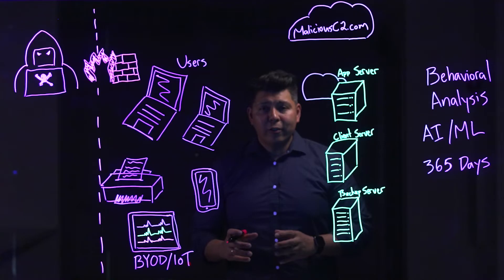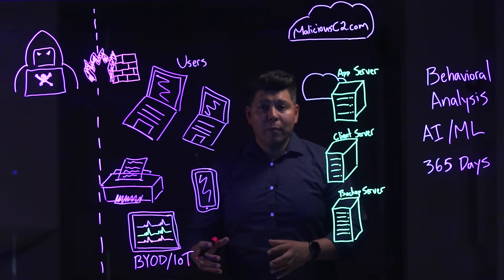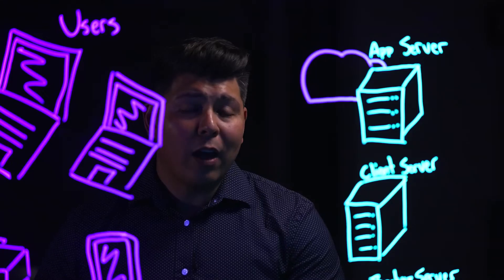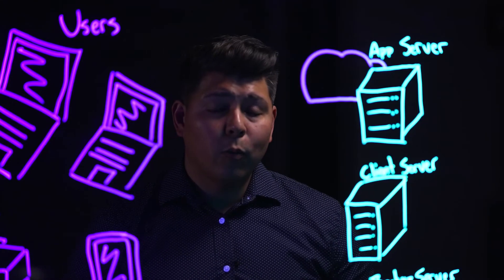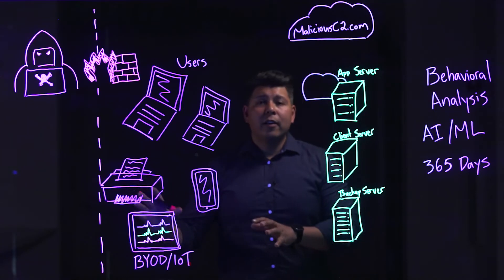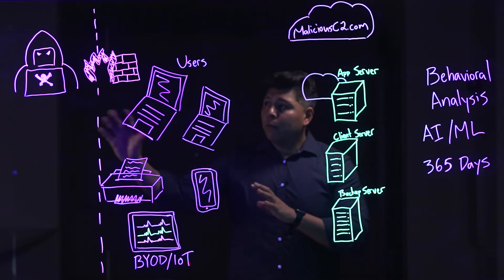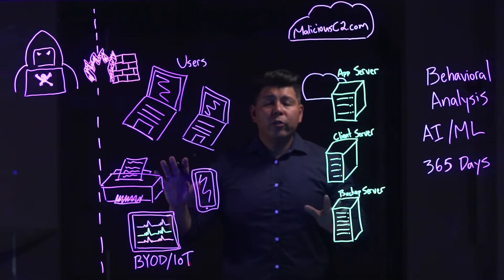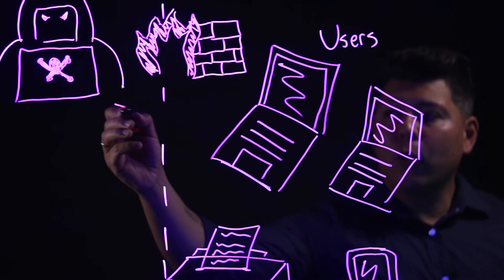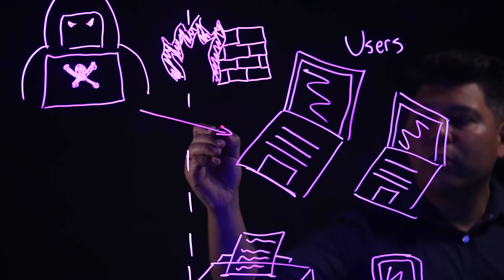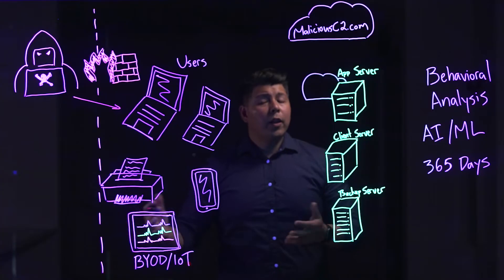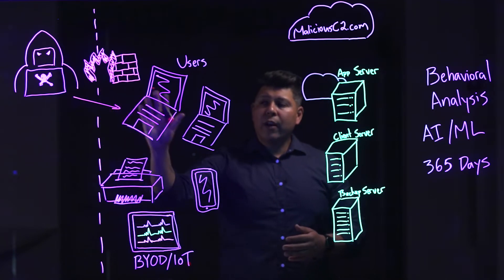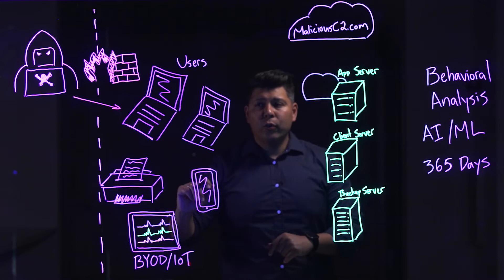The foundation to any mature security program is being able to detect malicious traffic on the network. We're actually looking at an example of a mocked-up cyber attack. What we're going to do is assume that the attacker has already bypassed your perimeter defenses — they're getting better at doing that. So once they've gotten into the network, what is the attacker doing?